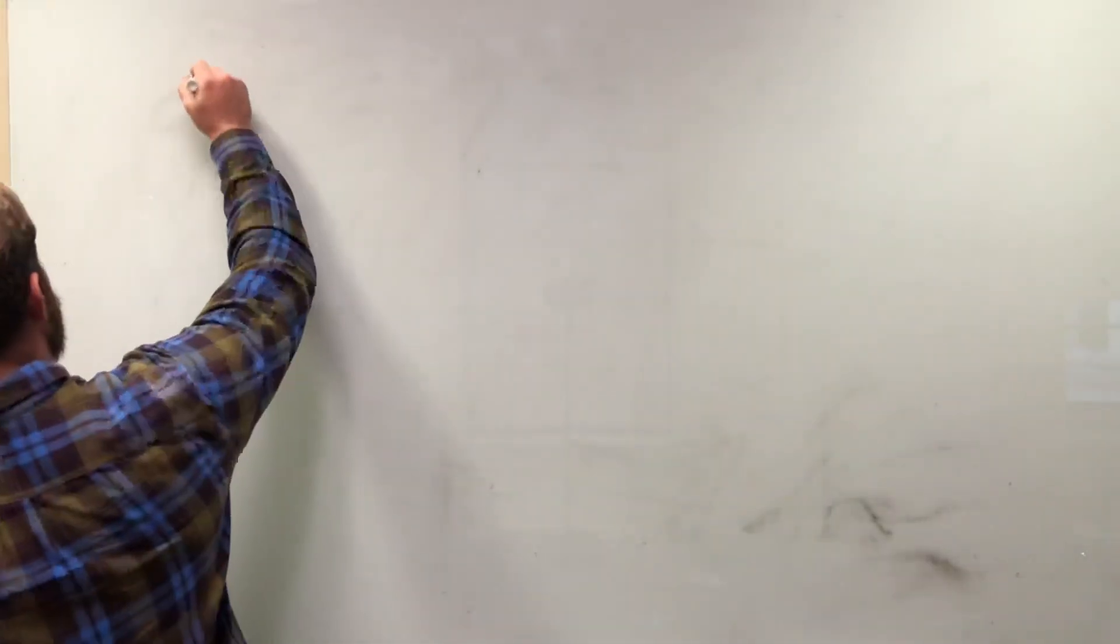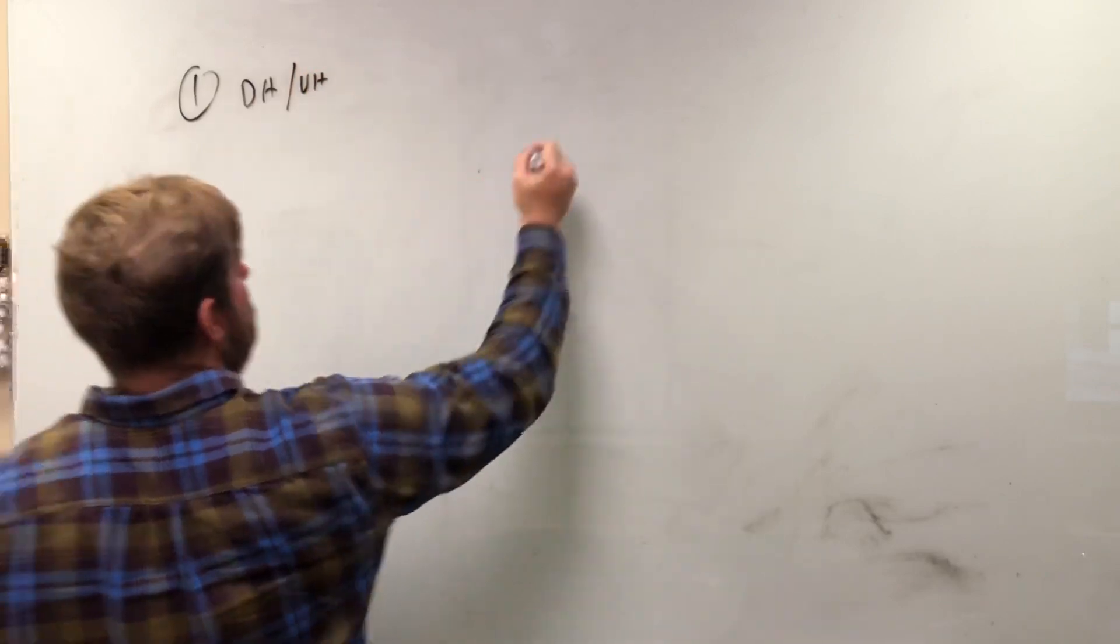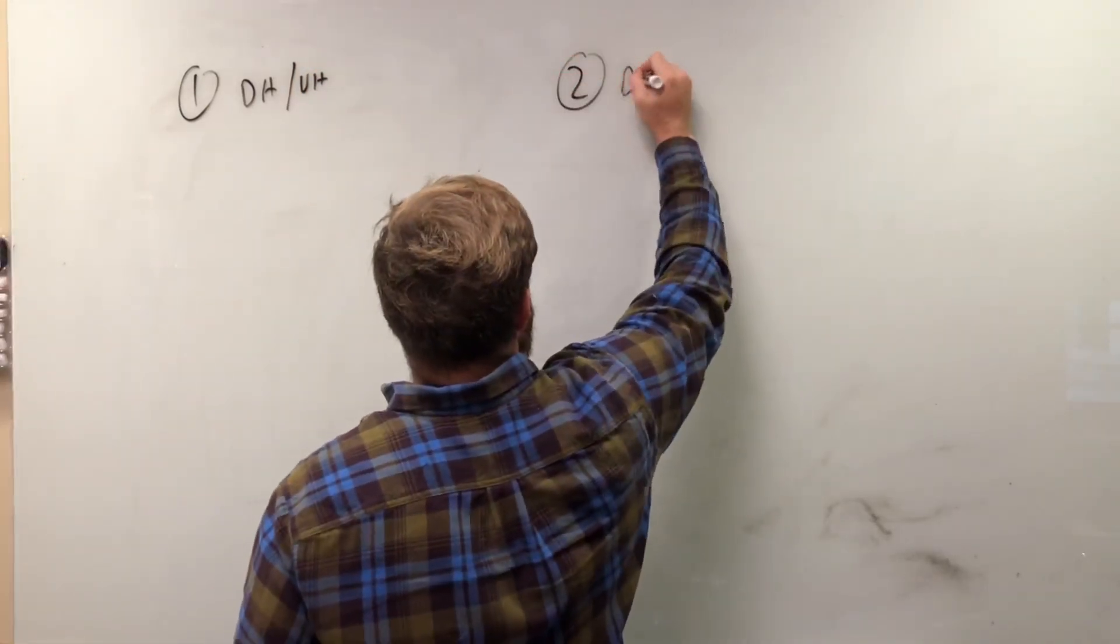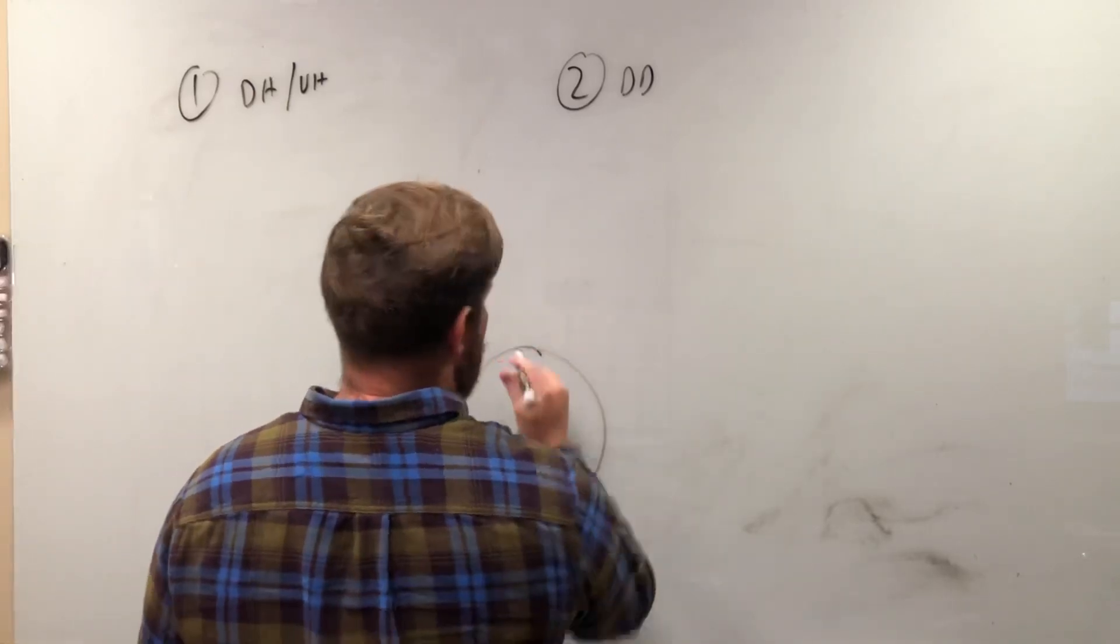So first thing we're going to say is a three-step system. So first step, the drug I have, the volume I have. Second step, we'll be able to figure out our desired dose. Our third step is the actual clock or the proportionate section.